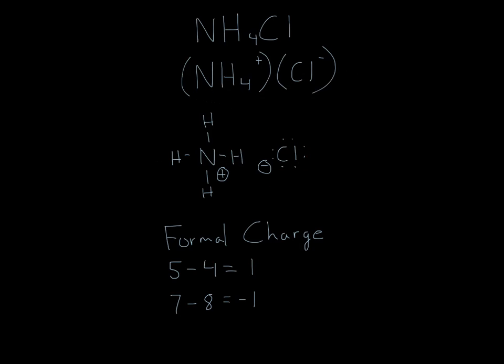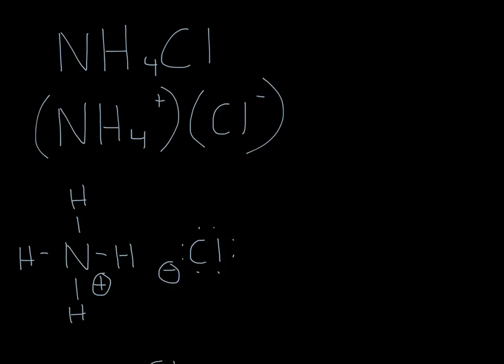Over here, chlorine is a group 7 element. So we'll put a 7 and then count the number of bonds or electrons. Since there's no bonds, we'll just count the electrons. So 1, 2, 3, 4, 5, 6, 7, 8. So 7 minus 8 is negative 1. So that's why chlorine has a negative charge and NH4 has a plus charge.